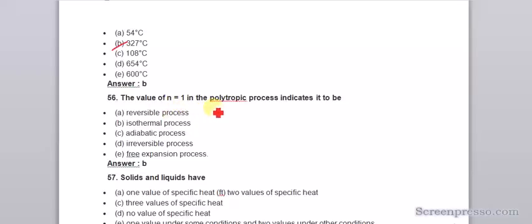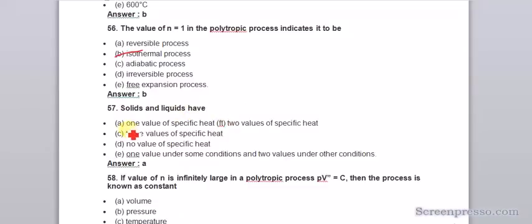The value of n equals 1 in the polytropic process indicates it to be isothermal process. Solids and liquids have one value of specific heat.